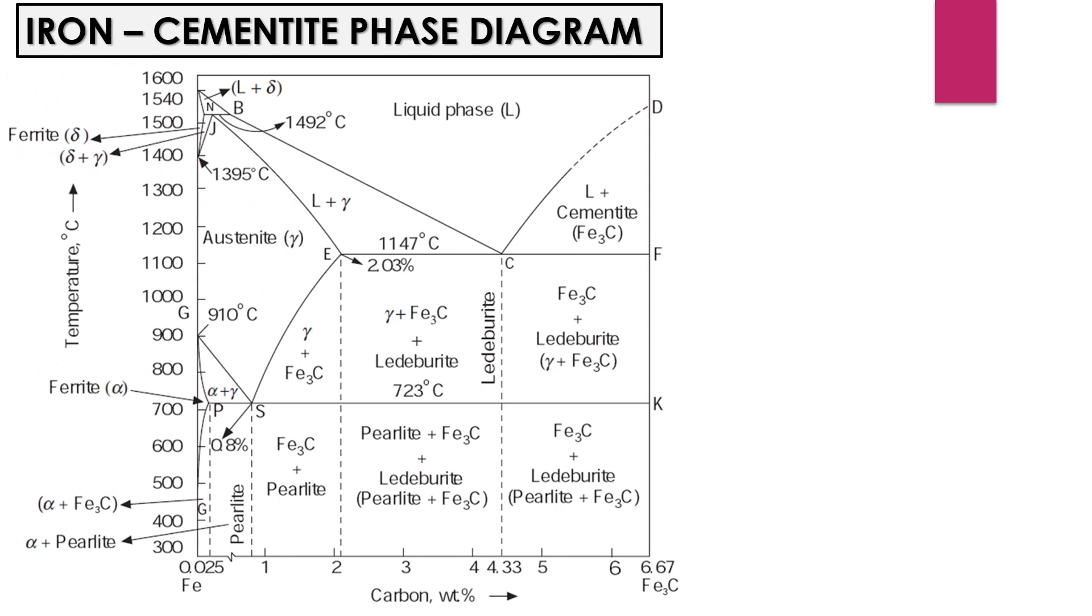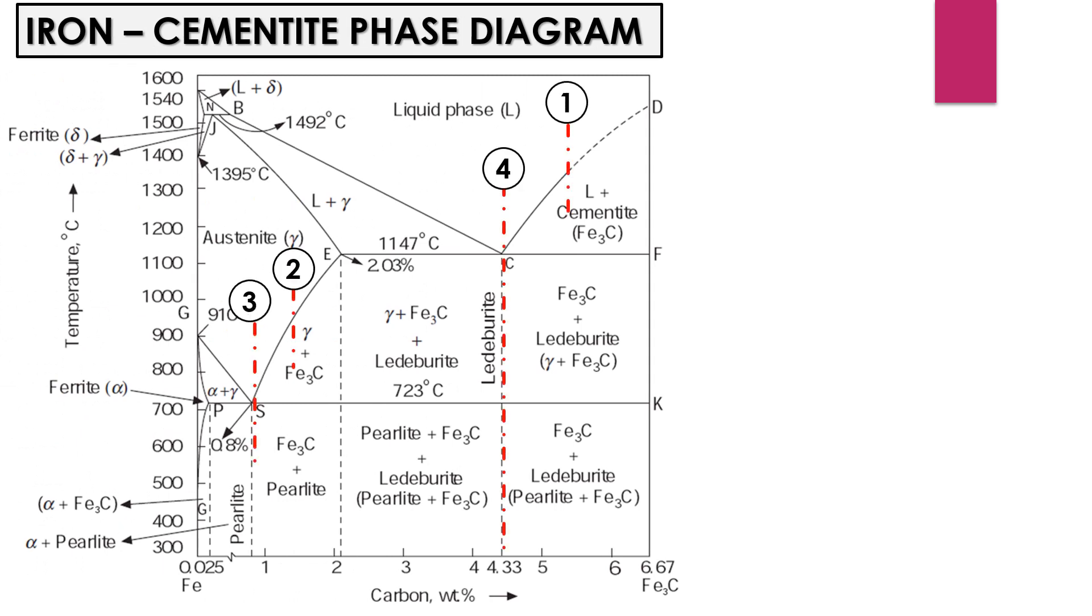In the iron carbon phase diagram, the cementite phase is formed through four different reactions, each occurring at different compositions. Let's explore each of these reactions one by one.